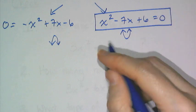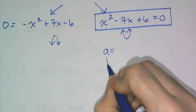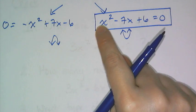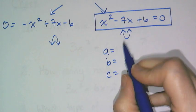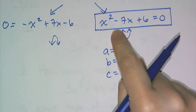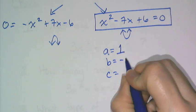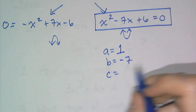Now looking at this, I need to be able to pick out the a value, the b value, and the c value. Well, the a value looks like it's missing, but remember there's a phantom 1 there, so a is really 1. And then b is negative 7, it's negative 7 because the sign goes with it, and c is 6.